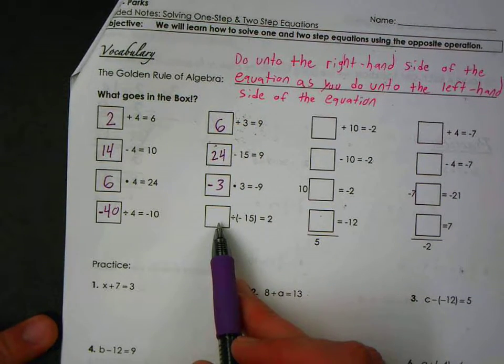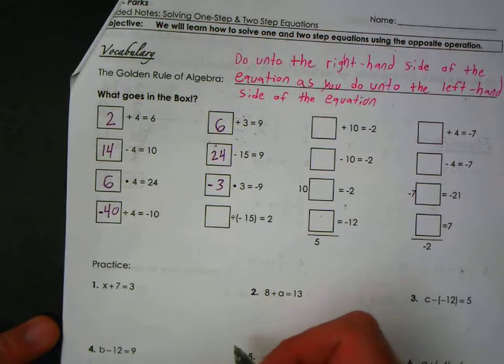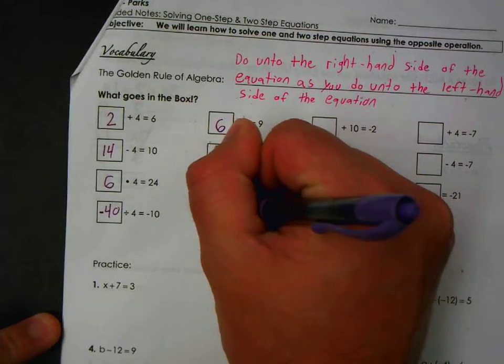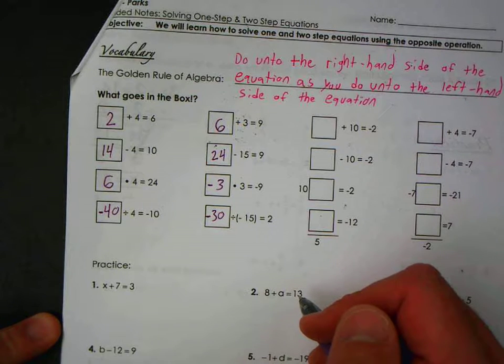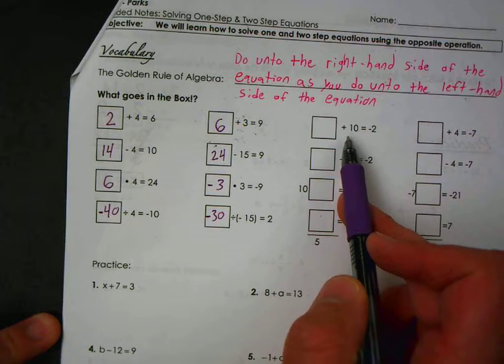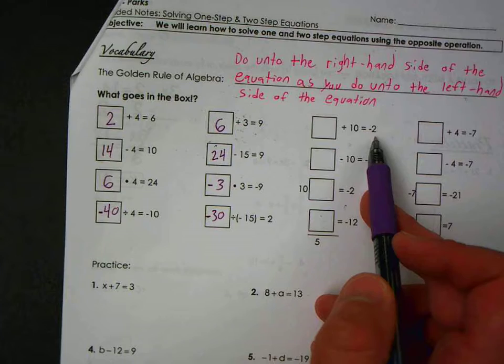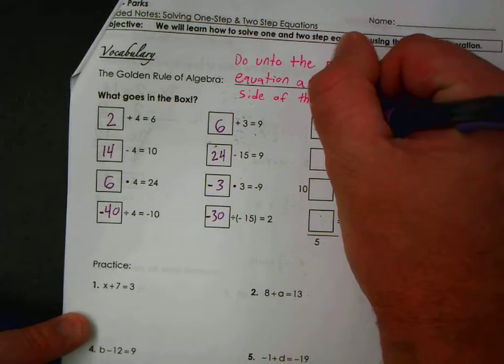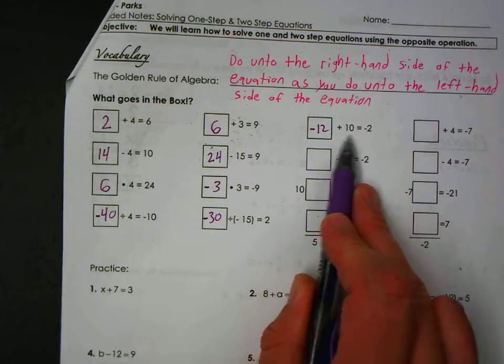What number when you divide it by negative fifteen do you get two? Negative thirty. A negative divided by a negative. What number plus ten is negative two? Negative twelve. Check your work: negative twelve plus ten is negative two.